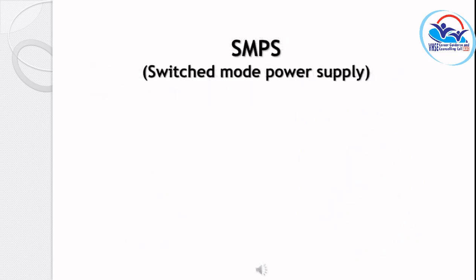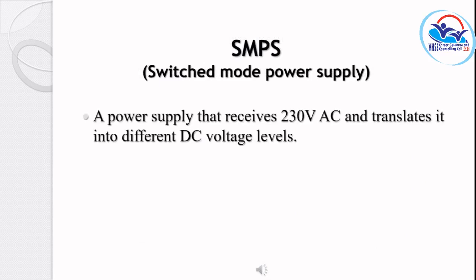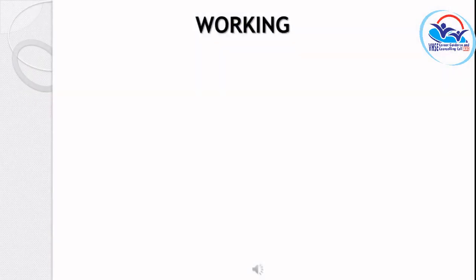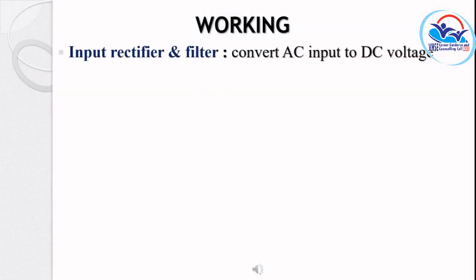SMPS stands for Switched Mode Power Supply. It is a power supply that receives a 230 volt AC signal and translates it into different DC levels. The main components of SMPS are: inverter or chopper, output transformer, output rectifier and filter, and chopper controller.